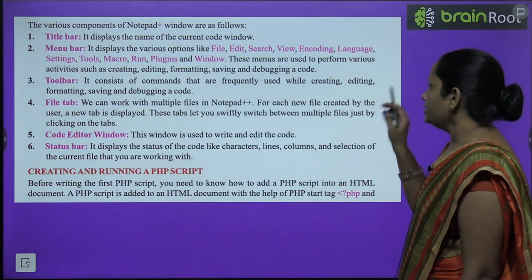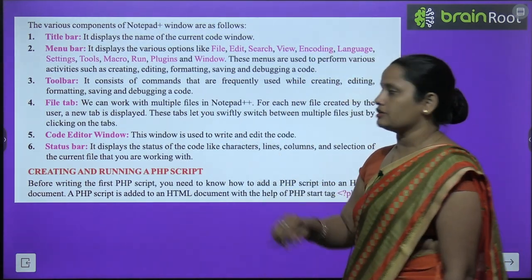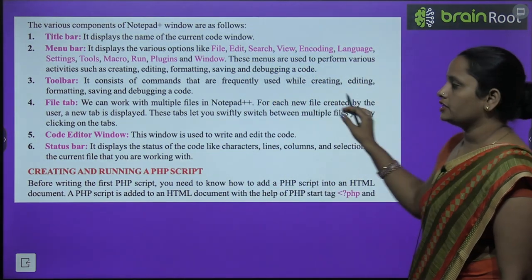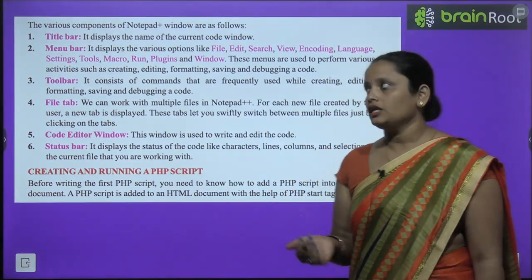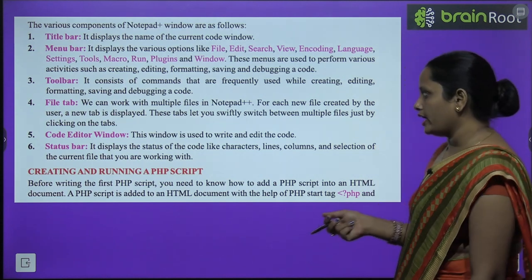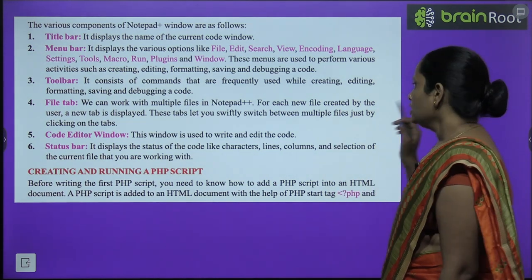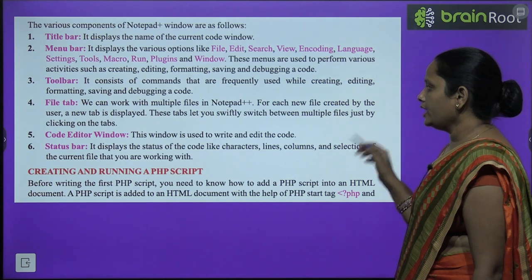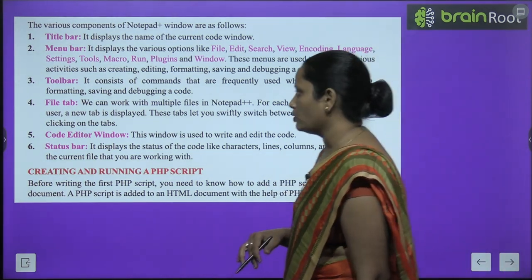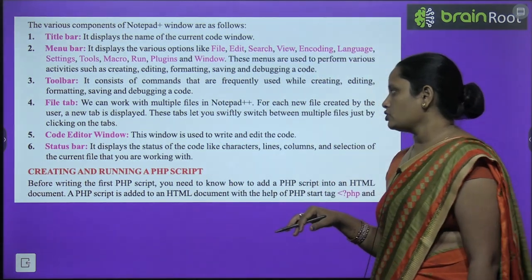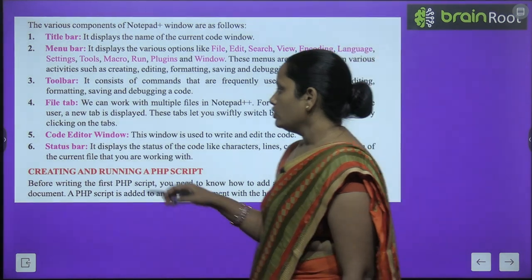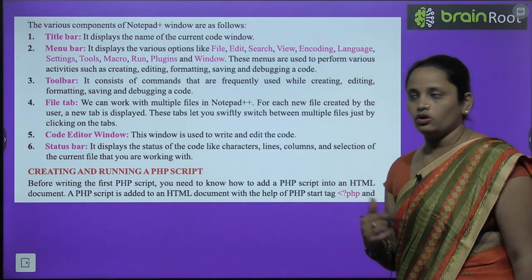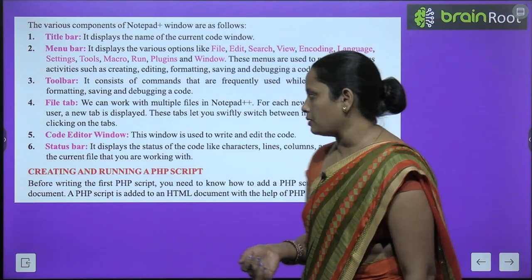The menus help us create, edit, format, save, and debug codes. Then there is the toolbar with different tools to create, edit, format, and save code. The file tab shows many files which can be used for different purposes. These tabs let you swiftly switch between multiple files. Then comes the code editor window, which is used to write and edit code. Finally, the status bar displays status information such as character, line, and column.